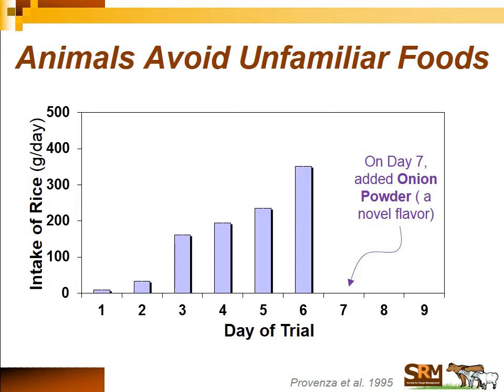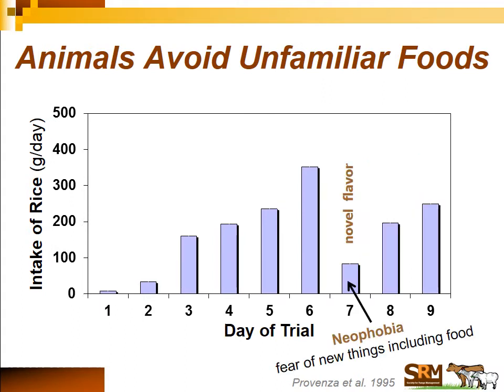Another way animals avoid toxic foods is to be very careful with unfamiliar foods — called neophobia. When given a new food like oats, animals start with very little on day one, gradually increasing intake as it becomes familiar. In a simple experiment by Dr. Provenza, when a novel flavor — onion powder — was added to familiar rice on day seven, intake dropped sharply because animals expressed neophobia, a fear of new things including food. After a day of avoidance, intake gradually increased again. We assume animals are taking a few bites to assess the feedback from those foods.